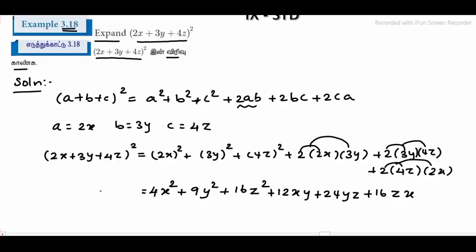It is the 2x plus 3y plus 4z the whole square kana expansion form. Okay, thank you.